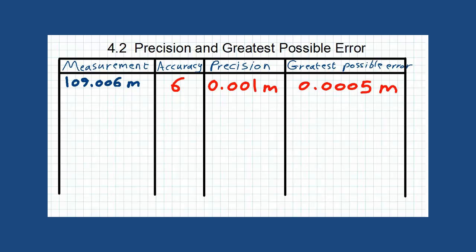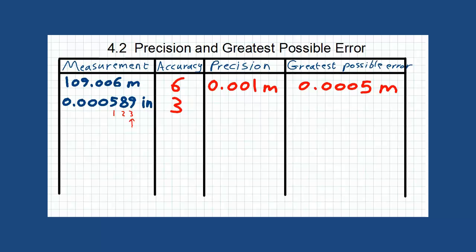For the next example, we start counting from the first non-zero number from the left: 1, 2, 3 — so we have 3 significant digits, which is our accuracy. The last number counted is changed to 1, and all numbers before it become zeros. This is our precision. Divide this precision by 2 to get the greatest possible error for this measurement.